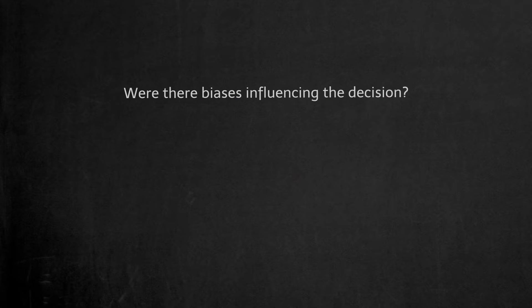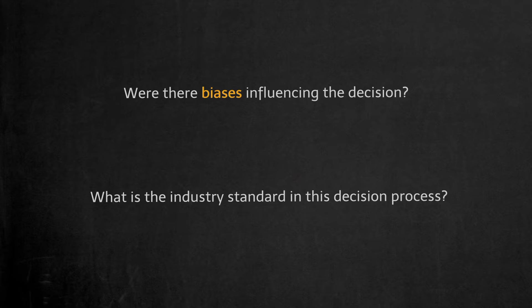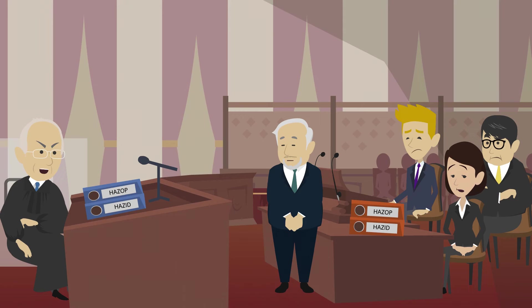Were there biases influencing the decision? What is the industry standard in this decision process? There has been a fatality at the facility due to rupture of a pressurized vessel, and you all were involved in the design. What evidence do you have to demonstrate that reasonable judgment was used in your design? Clearly, the outcome was tragic, but for the court to determine if professional negligence was committed, we are interested in your decision-making process during the design.